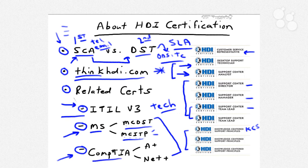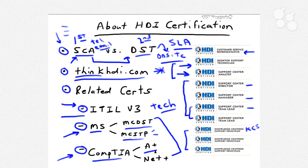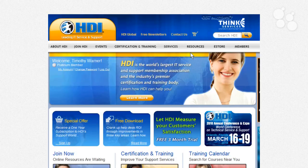CompTIA is a vendor-neutral consortium of technology vendors, IT pros, and academic institutions who publish vendor-neutral certifications in the IT space. The two main ones to consider alongside HDI SCA are A+, which is the computer hardware technician and software troubleshooting credential, and Network+, which is an entry-level title for computer network support.